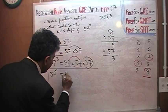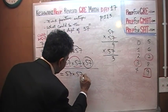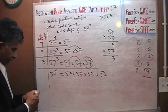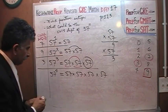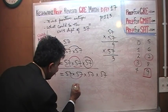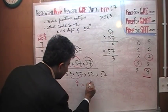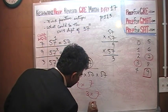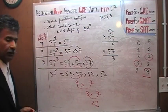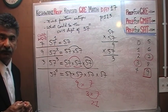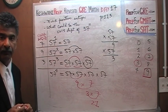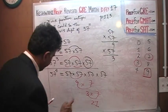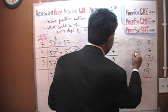57 to the 4th power will be 57 times 57 times 57 times 57. Watch what happens. 7 times 7 ends in 9. 9 times 7 ends in 63. 3 times 7 ends in 21. So 57 to the 4th power ends in a 1.